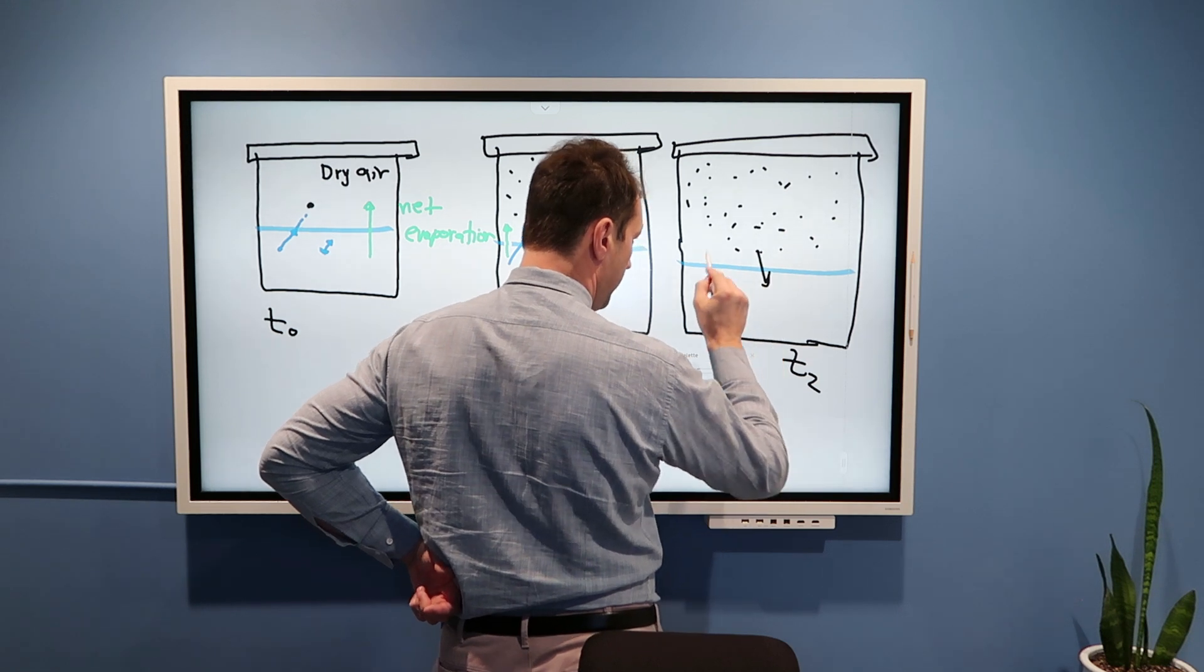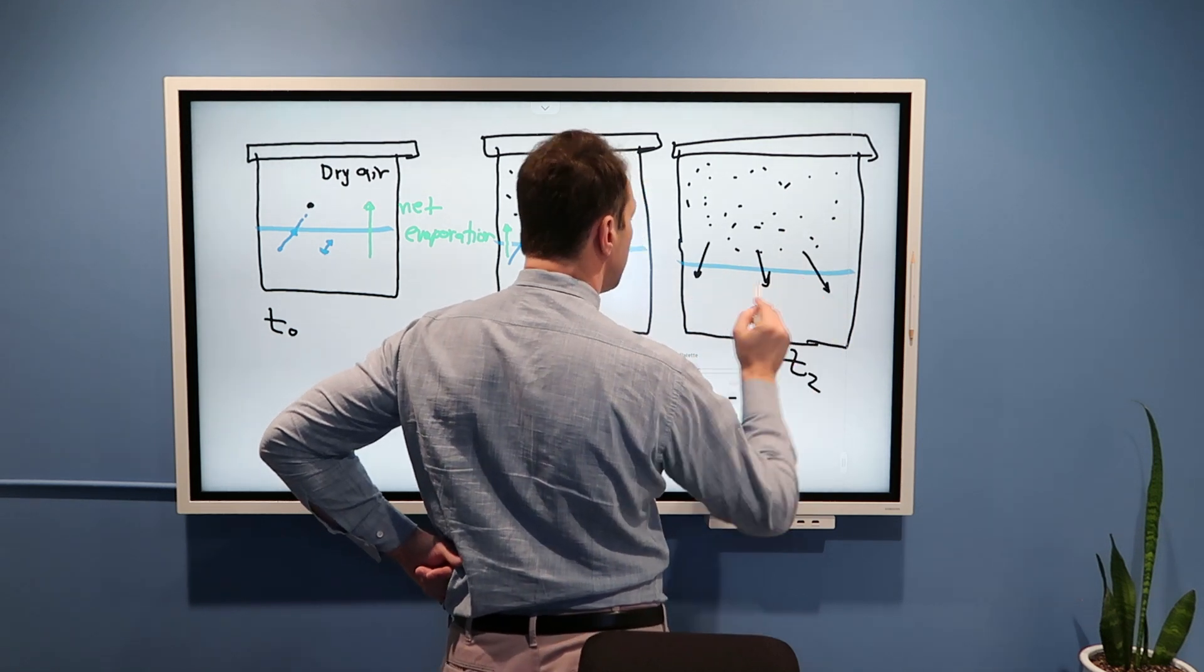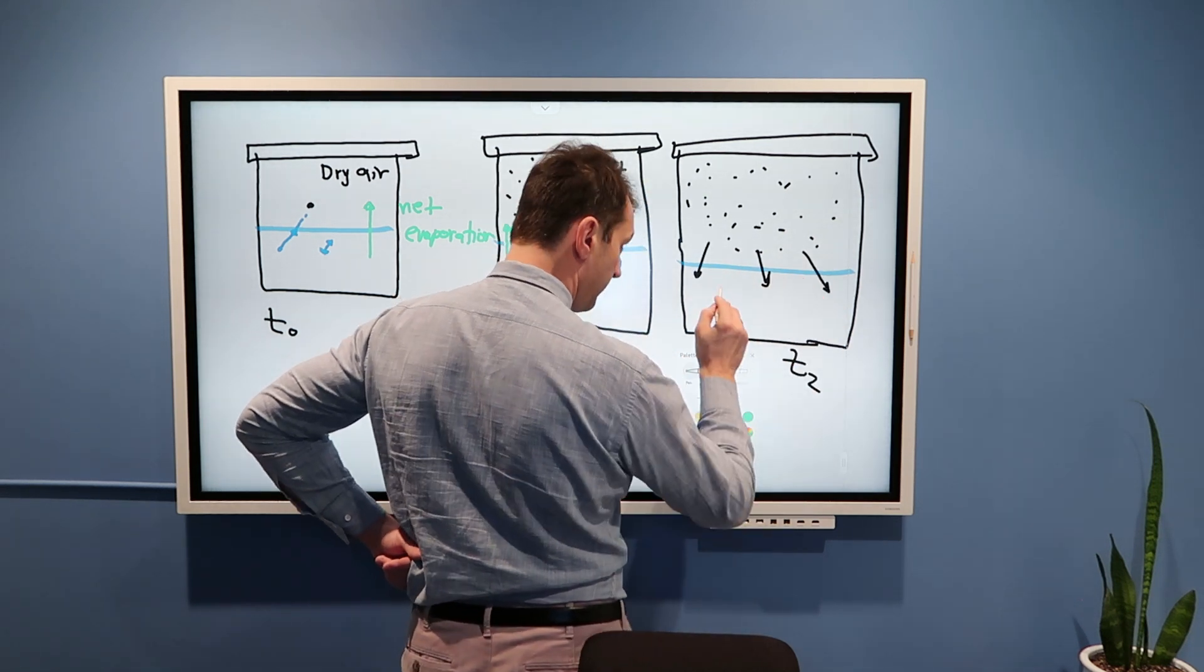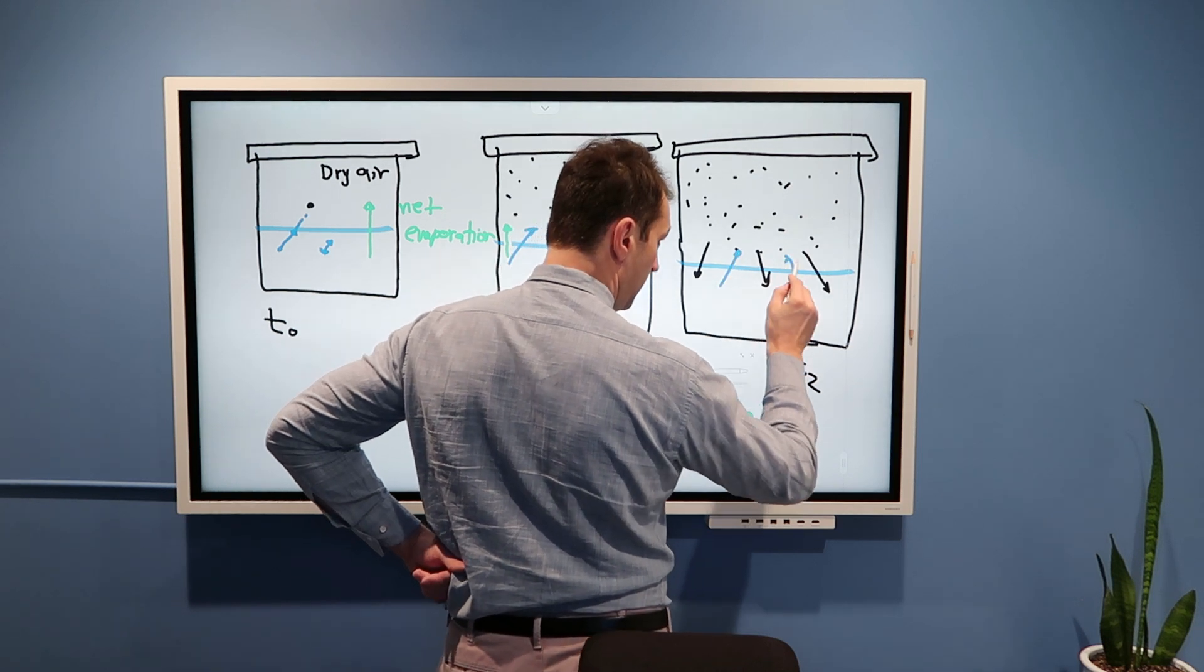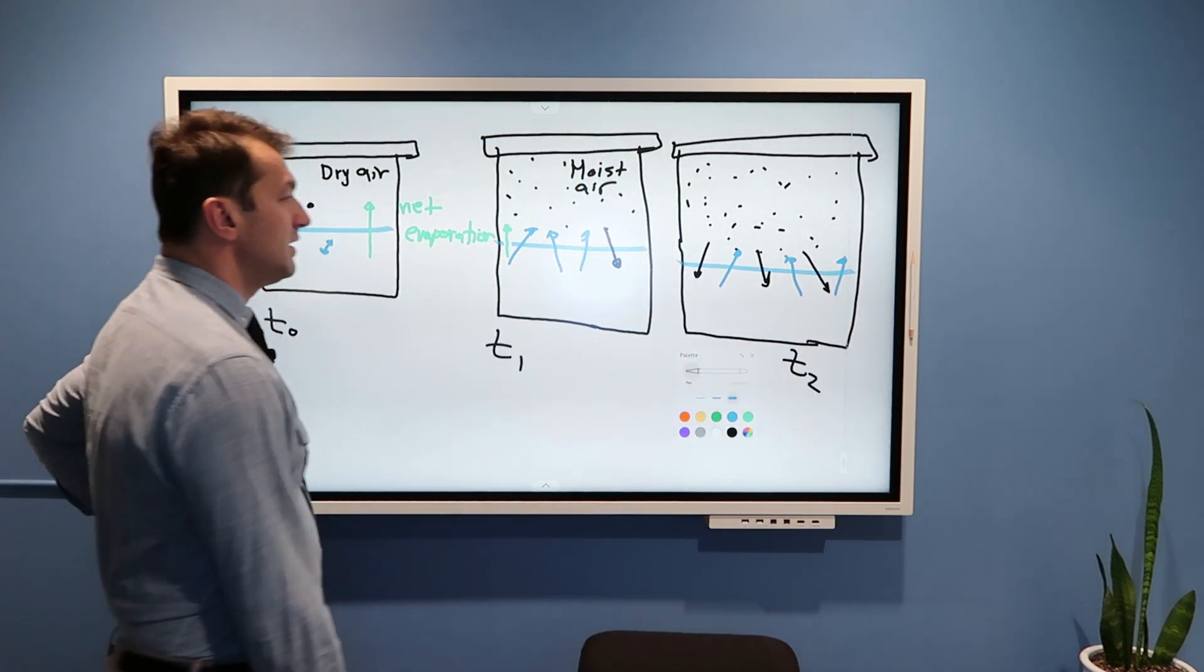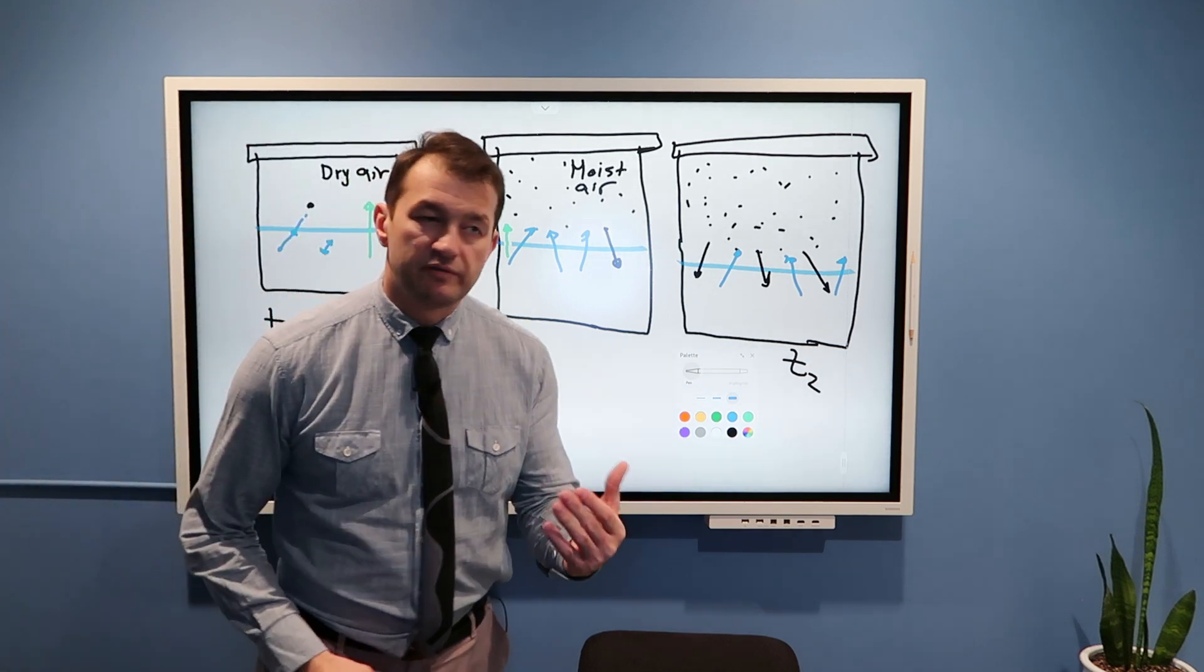Some of them are returning to liquid, and let's say for good measure we have three also that are evaporating. In this case we have equilibrium.